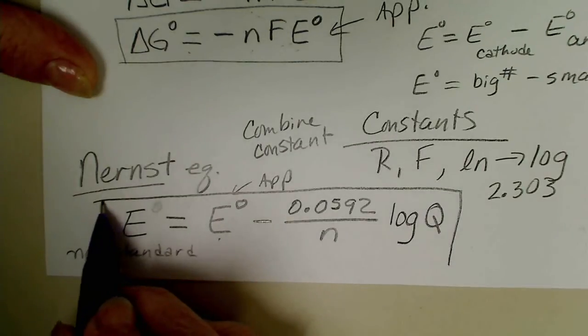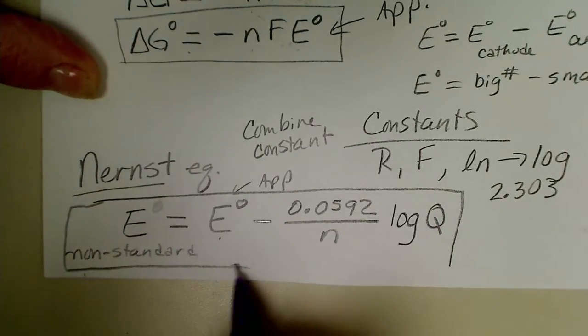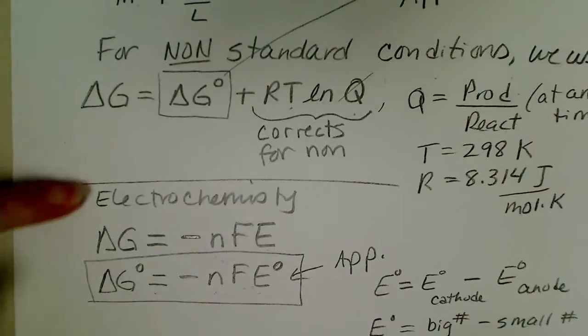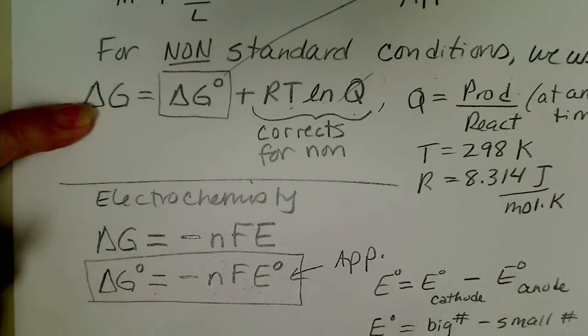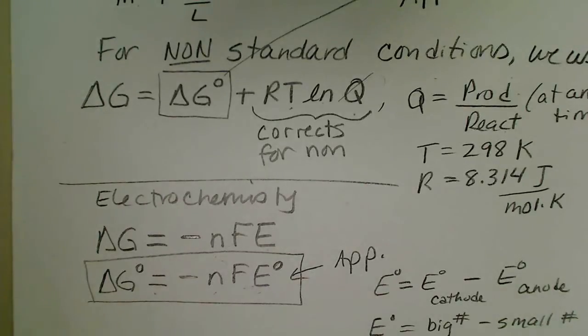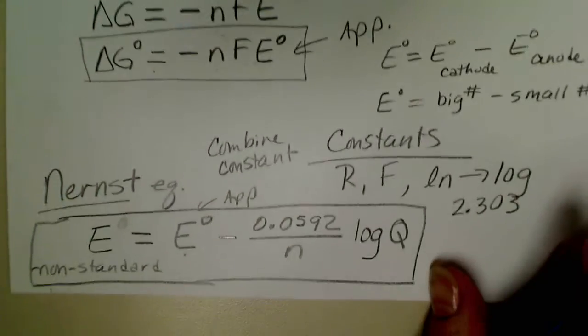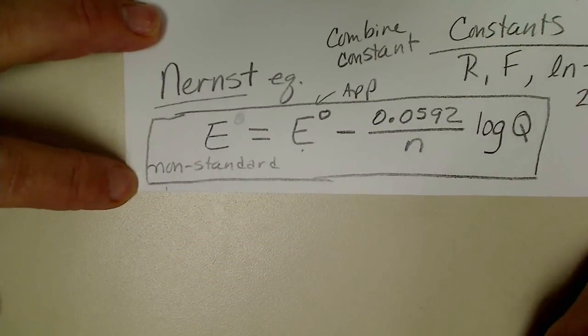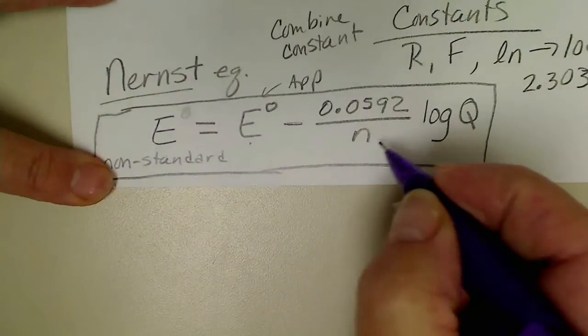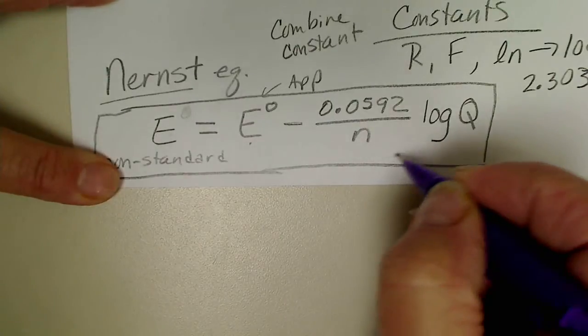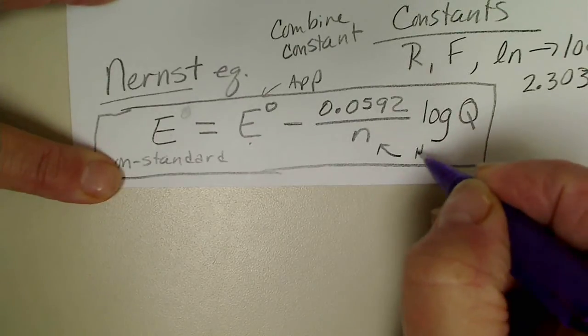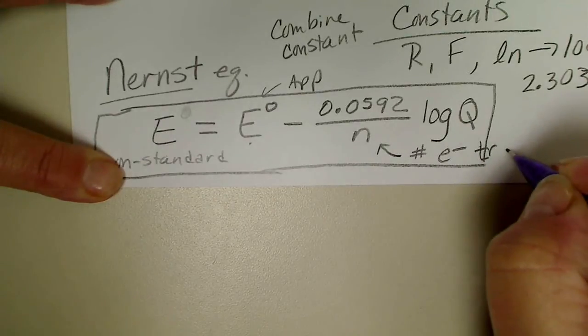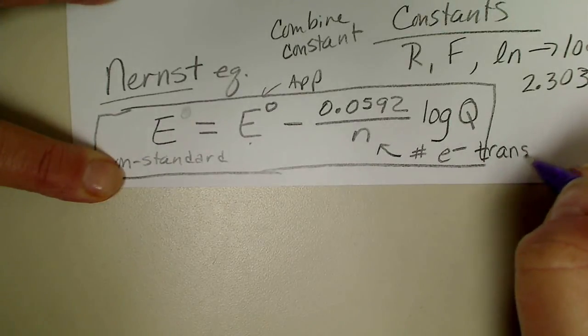So this equation doesn't look like that equation but if we did the algebraic substitution, combined all the constants, then we would end up with the Nernst equation. So n is still the number of electrons transferred during the oxidation reduction process.